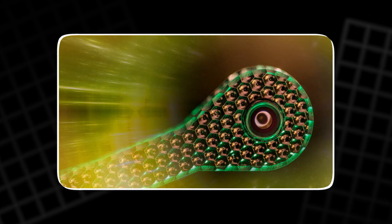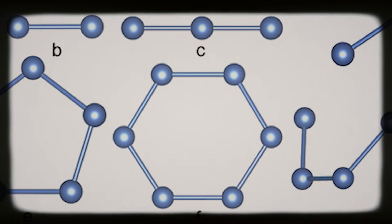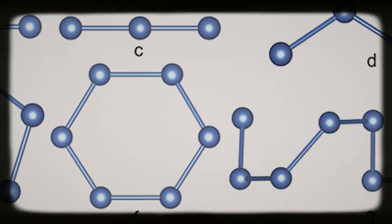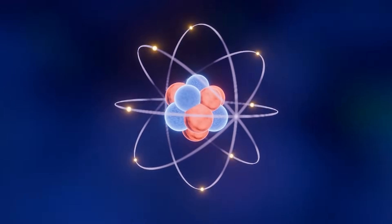TNT releases about 4.2 megajoules per kilogram when it breaks down. Many polynitrogen structures are predicted to go well beyond twice that, because the endpoint, N2, is so stable.